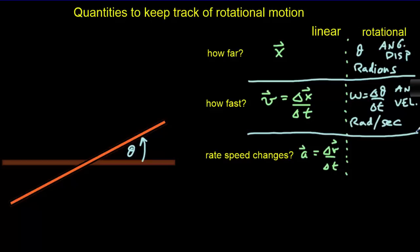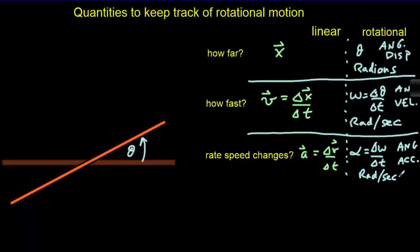Then we're going to need a third quantity to keep track of how fast that rotational rate is changing. We use alpha to represent that — it's called the angular acceleration. It's equal to the rate of change of angular velocity, and its units are radians per second every second, or radians per second squared.